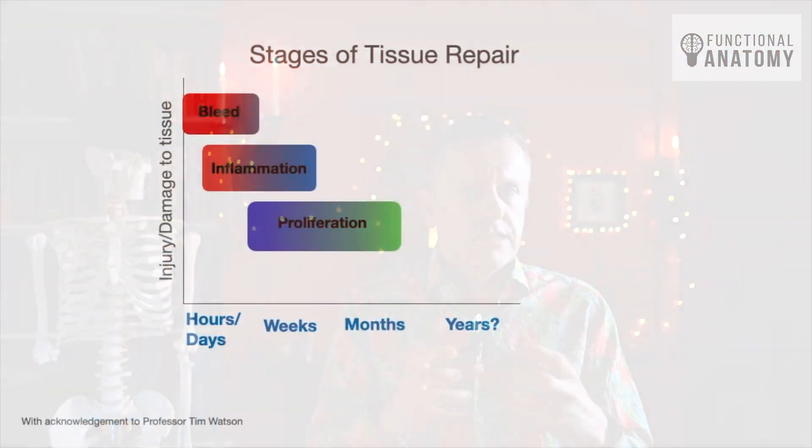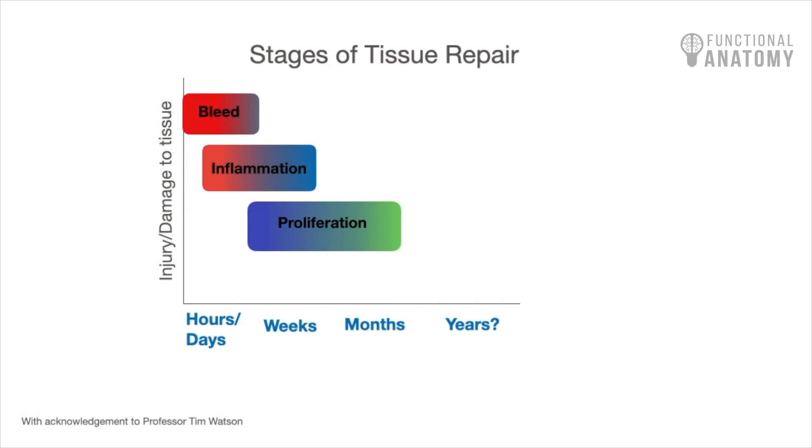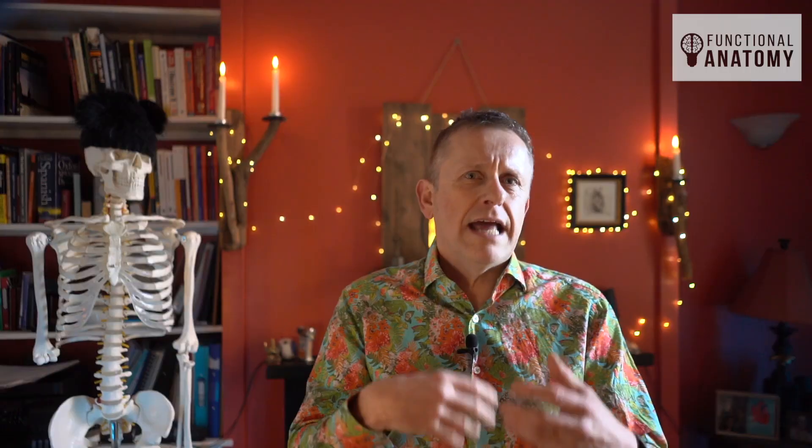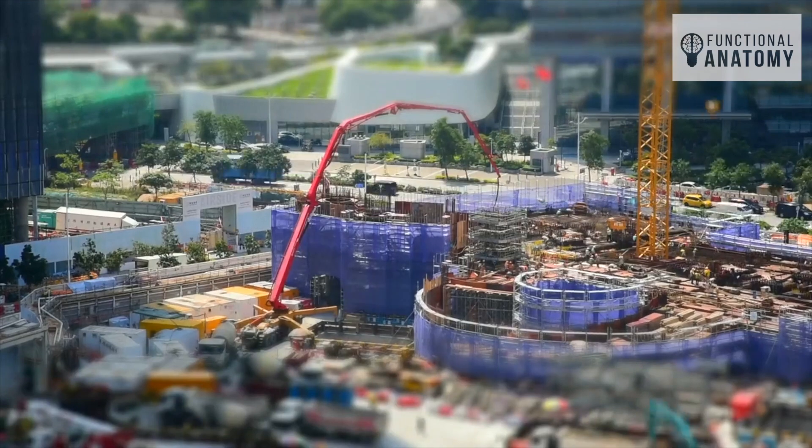While the macrophages and phagocytes are clearing debris, they're also sending out signals for fibroblasts to come in and start their work. This leads to a really important statement: inflammation leads to proliferation. When we talk about proliferation we mean cellular activity — cells in the area doing their thing. In this instance it's macrophages and phagocytes in a process called phagocytosis, and they're sending signals to bring in the cleanup operation and then the repair team behind them.